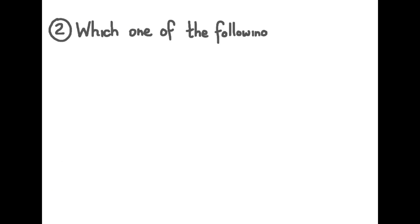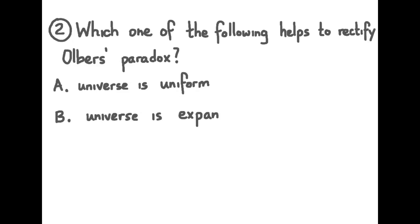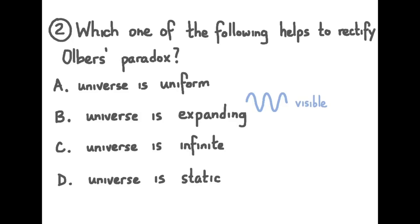And number two. Which one of the following helps to rectify Olber's paradox? Universe is uniform, the universe is expanding, universe is infinite, or universe is static? Pause your viewer and try this question. Here is an electromagnetic wave depicting visible light. If the universe is expanding, that waveform will be stretched out with expanding space, turning the visible light into perhaps infrared or microwave radiation. Not visible. A dark night sky because of the expanding universe. Our answer is B.